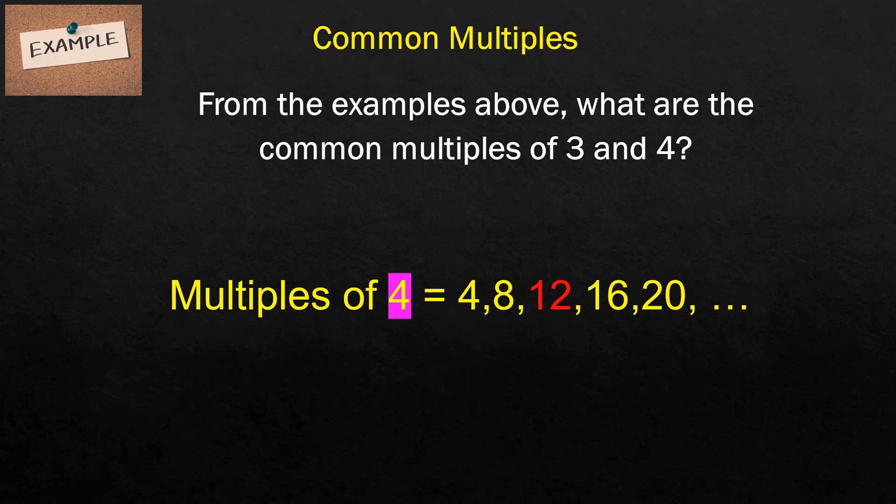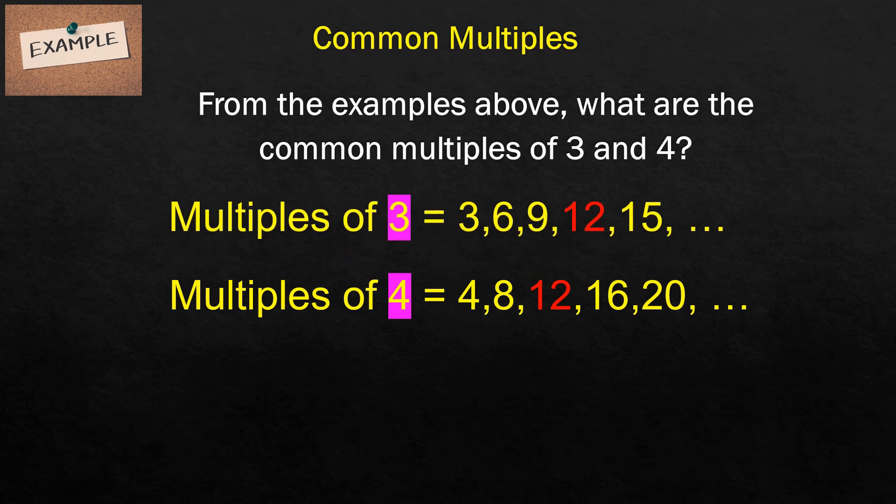So let's have multiples of 4 are 4, 8, 12, 16, and 20. Multiples of 3 are 3, 6, 9, 12, and 15.